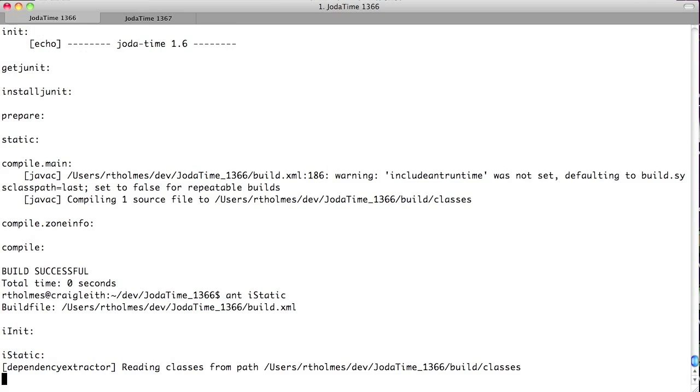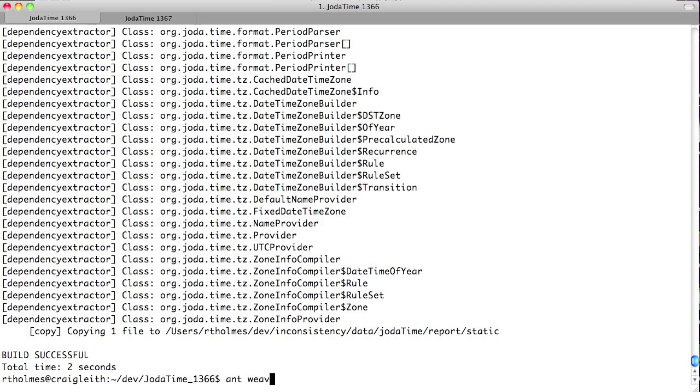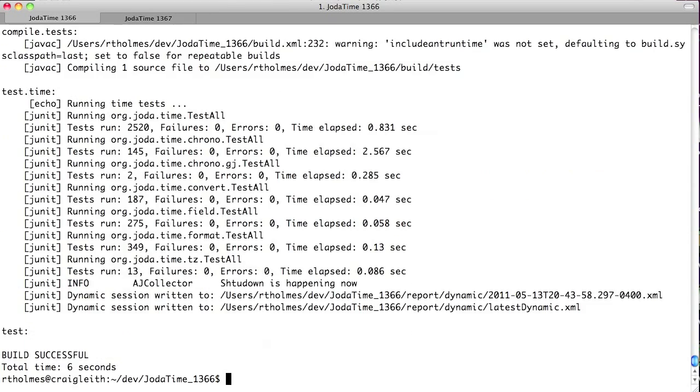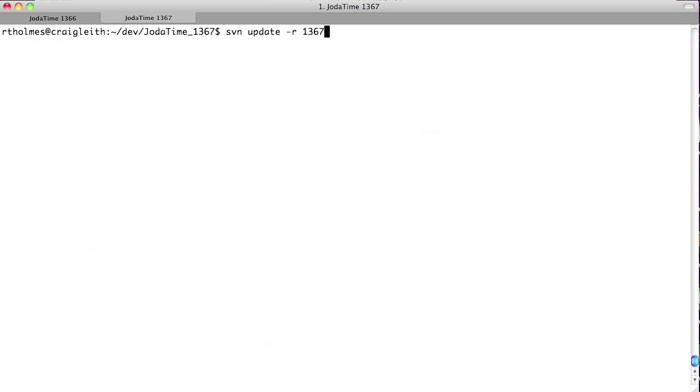Here we have checked out a specific version of the system, extracted its static structure, woven in our tracer aspect, and run the test suite to collect the dynamic trace. We repeat the same process with another version of the system.